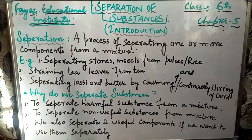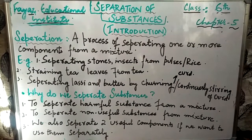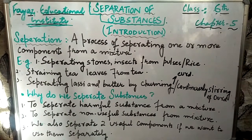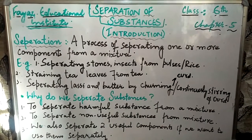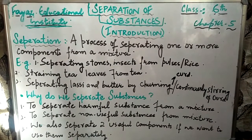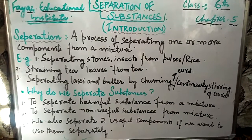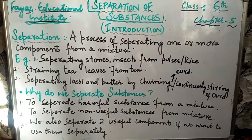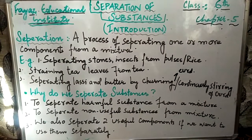Separation of substances means to separate different components from each other. Separation is a process of separating one or more components from a mixture. When two or more components come together to form a mixture, that is a mixture, and the process of separating those components from the mixture is called separation.